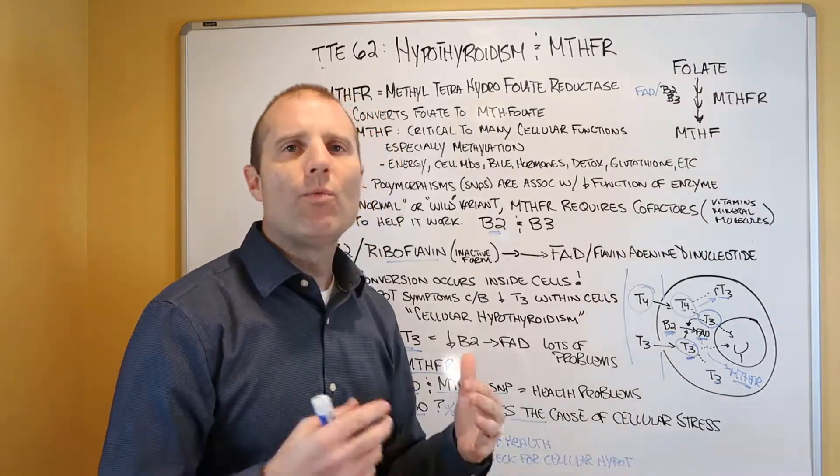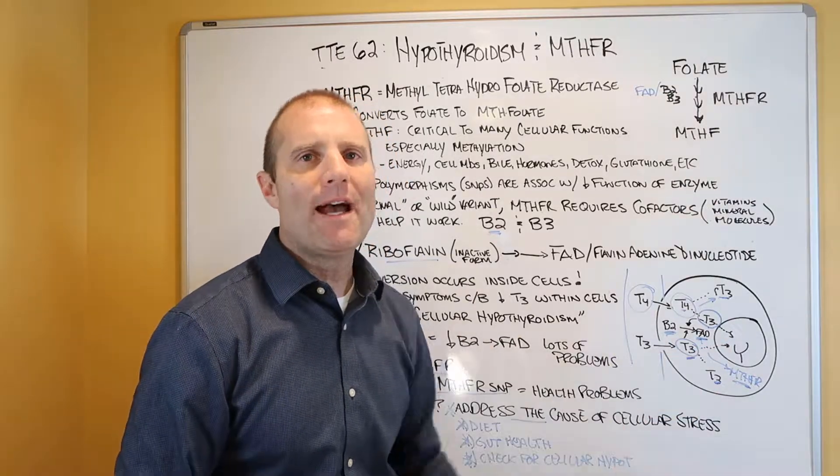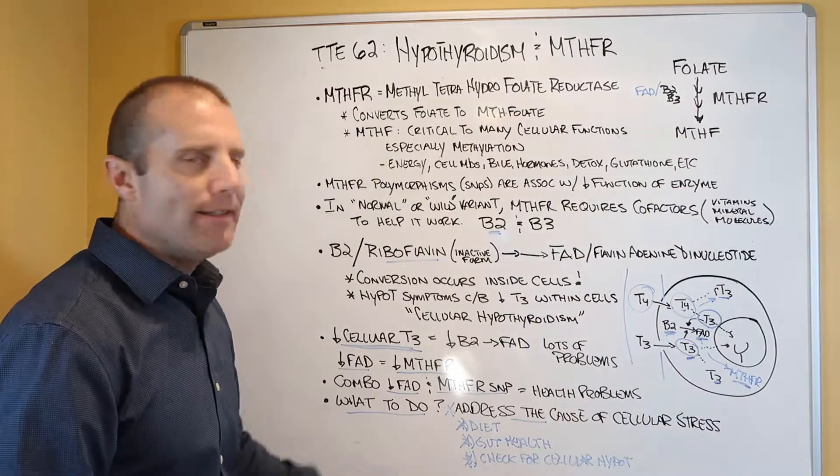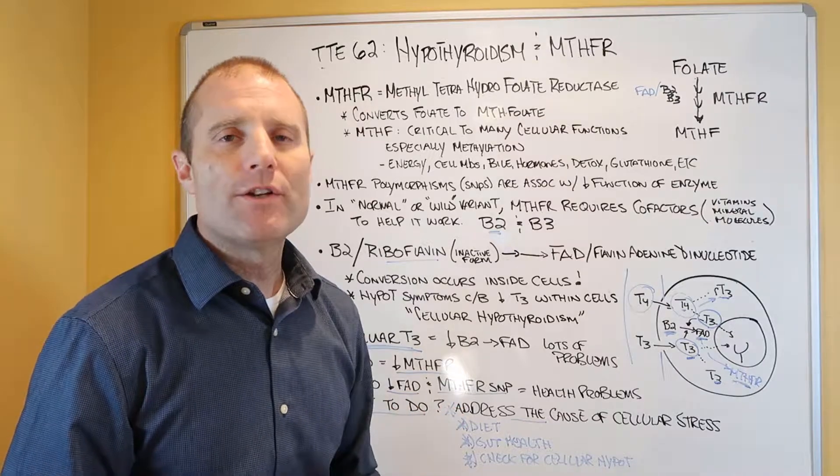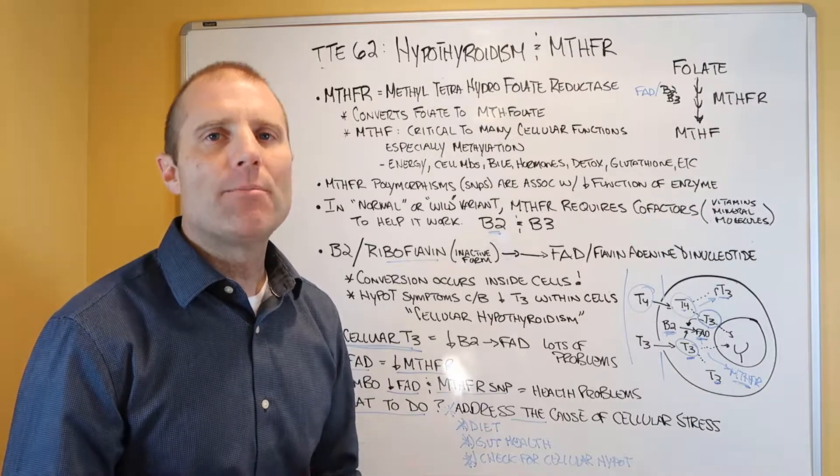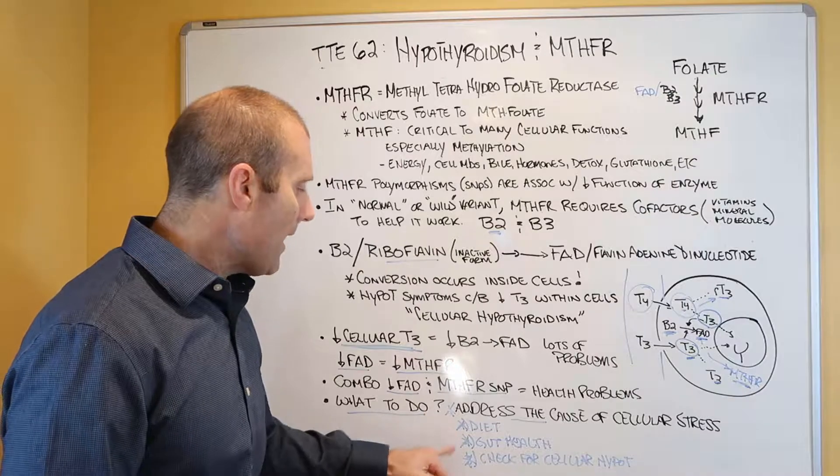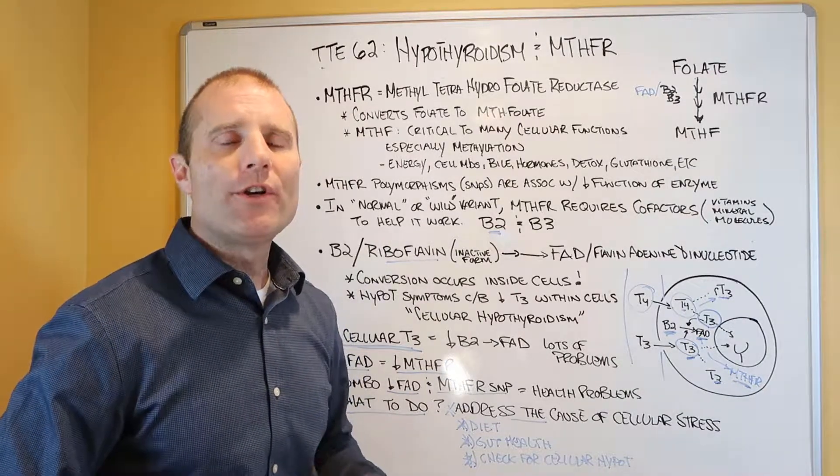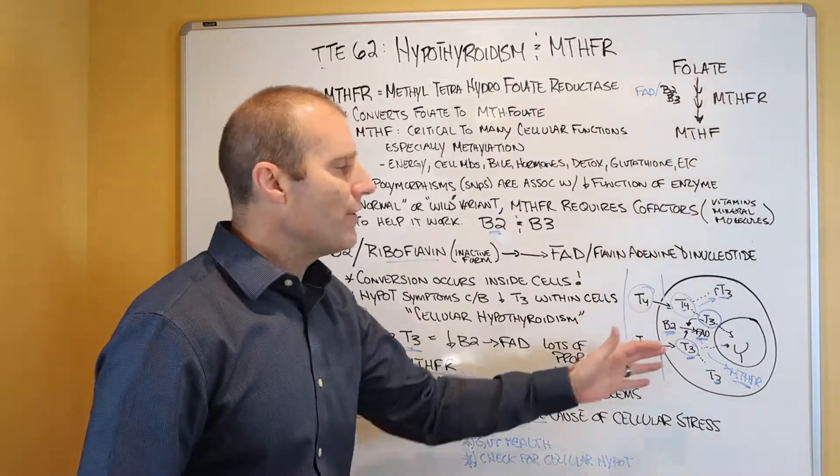Really, what you want to do is you want to work with a functional medicine practitioner like myself to figure out why the cellular metabolism is occurring in the first place. Sometimes we need to look at diet for people. People who have riboflavin deficiencies, they just may not eat foods that are sufficient in riboflavin. They may be taking stomach acid medications that decreases the absorption of B2. They may have leaky gut issues. There may be a number of situations that are going on that cause a decreased absorption of B2, so there isn't sufficient getting there.